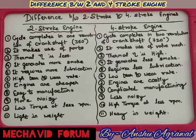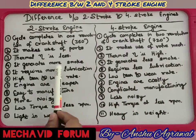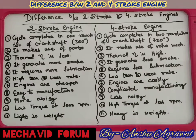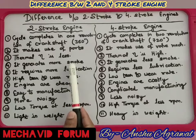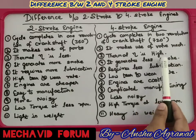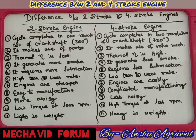The next point is that two-stroke engines generate more smoke, while four-stroke engines have less smoke. Smoke is the exhaust released during the exhaust stroke from the combustion chamber. In a two-stroke engine, we use 2T oil for lubrication, which is mixed and inserted into the fuel. When this 2T oil is mixed with fuel and takes part in combustion, it also burns and releases white-colored smoke, causing more pollution. In four-stroke engines, only fuel is used in the combustion chamber, so there is less smoke.